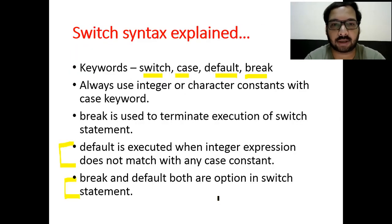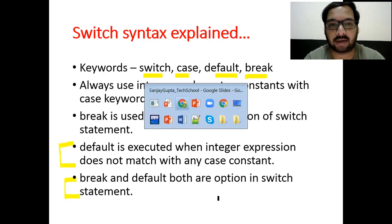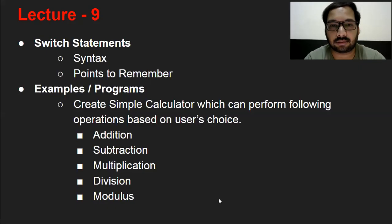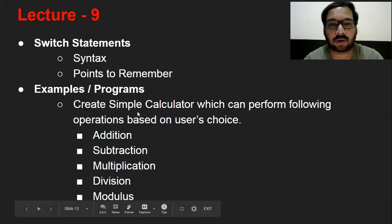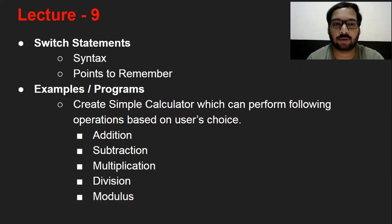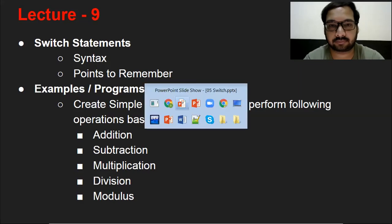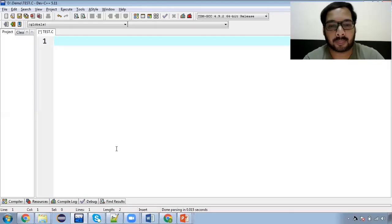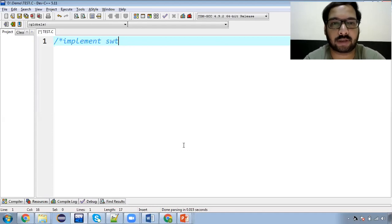I hope you understand the theory. Now let's look at a practical example. We will implement a program where the user performs one of five arithmetic operations based on their choice. We will display the options to the user, the user selects one, and then the program performs that task. Now let's implement switch in code.